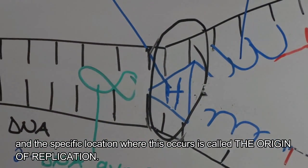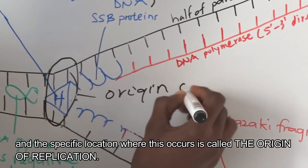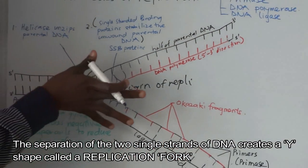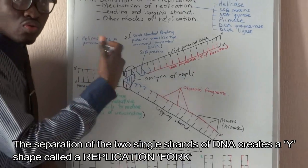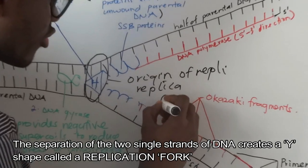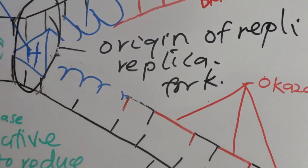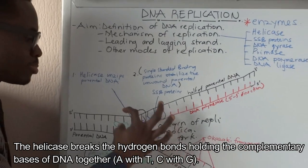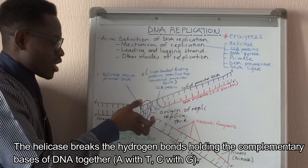The place where this unzipping is occurring is called the origin of replication. This creates a Y-shaped structure, which we call the replication fork. Helicase breaks the nitrogenous bases, or the complementary bases, that exist in the DNA strand.